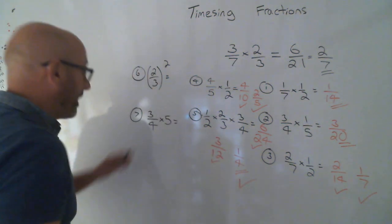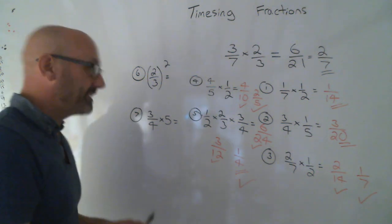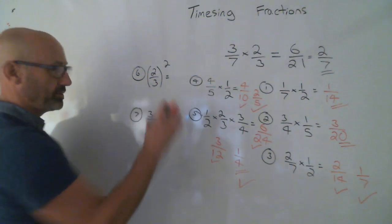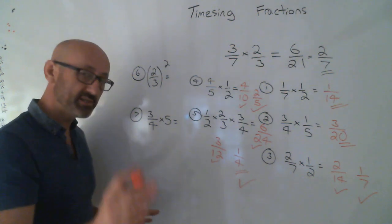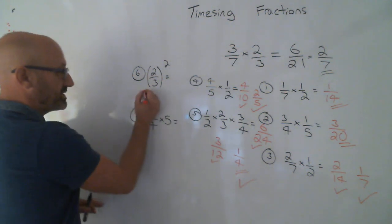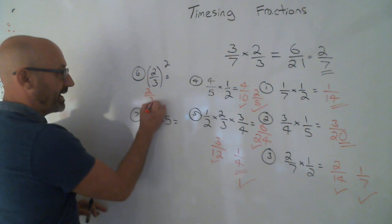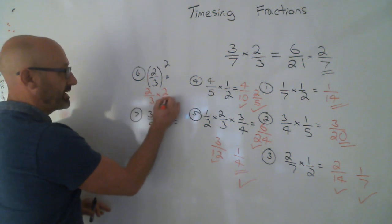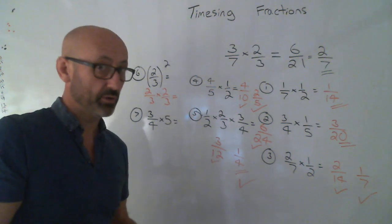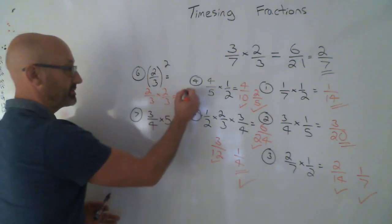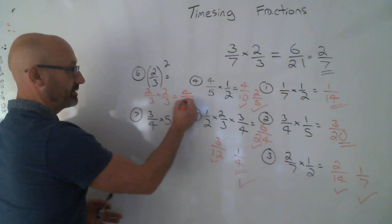This one here. I've introduced a squared. And do you know what to do when there's a squared? Well, what I suggest you do is whenever you see squared, is you write it out twice. And now it becomes a straightforward question. So times the tops, times the bottoms.